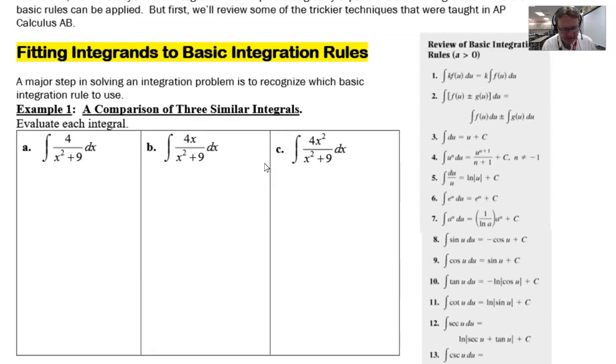Now what we're going to do is we're going to take a look at our first example, fitting integrands to basic integration rules and I basically have three very similar integrals as you can see. The only thing that varies is really the presence or lack of an x value in the numerator and finally for part c we have a squared x and it's amazing how that subtle change completely dictates the technique by which you guys would integrate each one of these.